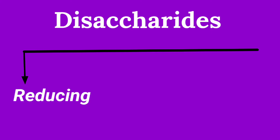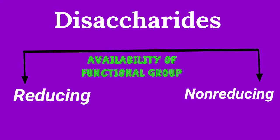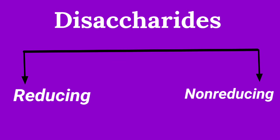Disaccharides are classified into two types: reducing and non-reducing disaccharides. The basis for this classification is the availability of functional groups — that is, aldehyde or ketone groups.